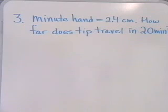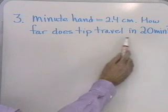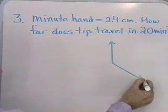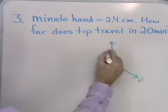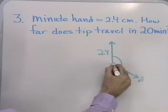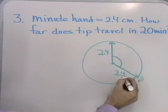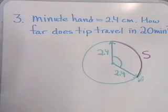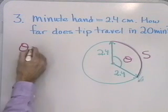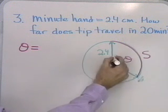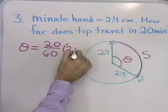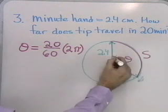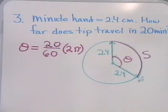Let's look at a problem involving a clock. Suppose the minute hand is 2.4 centimeters long — how far does the tip travel in 20 minutes? The minute hand starts at a position and travels for 20 minutes, so I can think of this as a central angle in a circle of radius 2.4. I want to know the arc length s. First I need to find angle θ. Once around is 60 minutes, so 20 minutes is 20/60 of a full revolution, giving θ equals 20/60 times 2π radians.